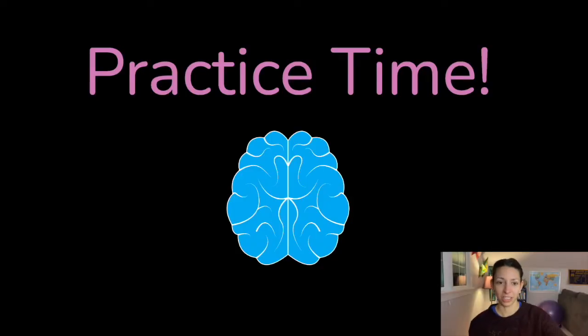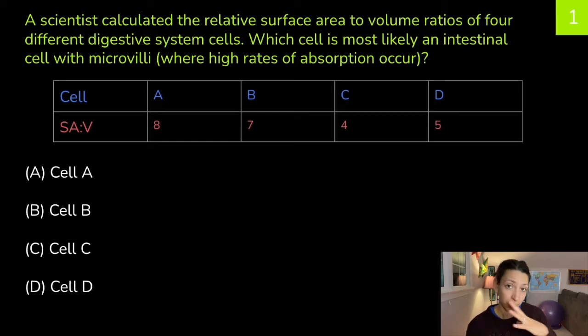Let's get to some practice questions. Remember, if I go too fast through these, or if you want to just mute me and look at the questions on your own, go ahead, or you can pause to think about your answer choices before I reveal them. A scientist calculated the relative surface area to volume ratios of four different digestive system cells. Which cell is most likely an intestinal cell with microvilli, where high rates of absorption occur? Cell A, cell B, cell D, or cell C?